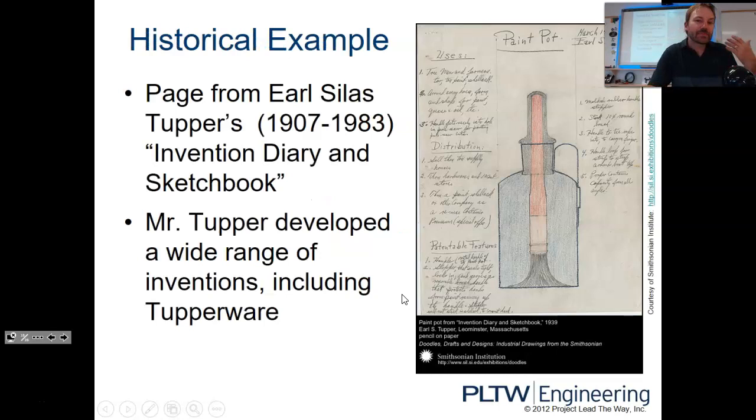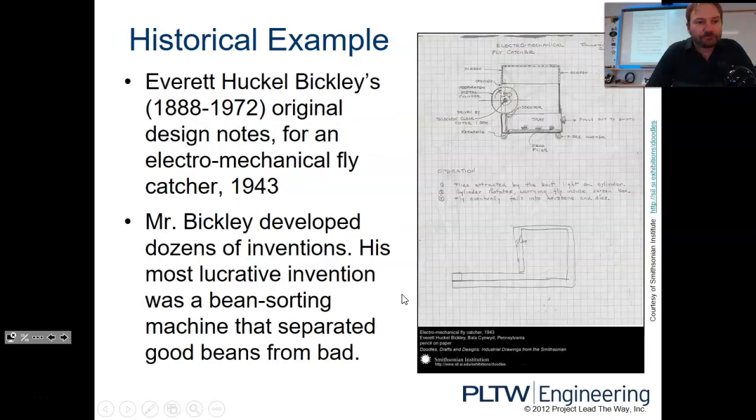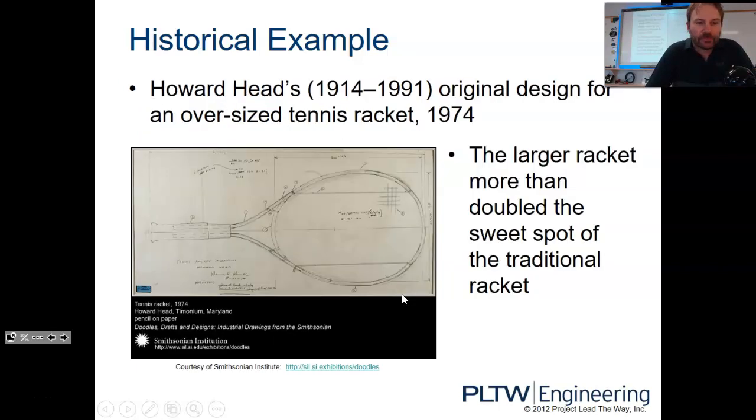Now, some examples from history. This is Earl Silas Tupper. Maybe you've heard of Tupperware. I'm sure your grandparents would if you ask them. This is his engineering notebook. Everett Huckley designs for an electromechanical fly catcher. Howard Head, 1914 to 1991. Maybe you've seen, it's actually a brand name of tennis racket. This was his first tennis racket that wasn't wooden.